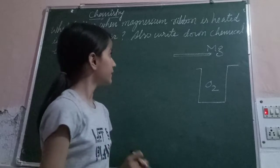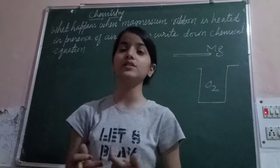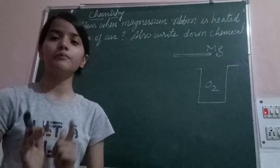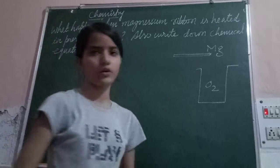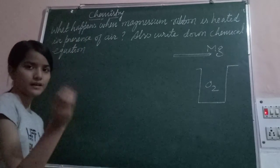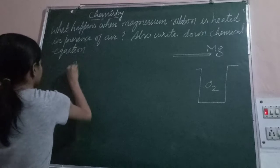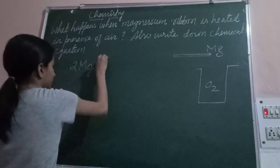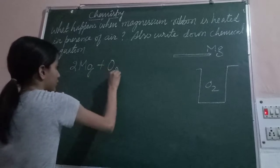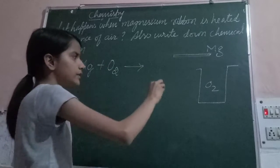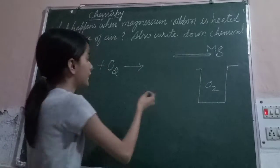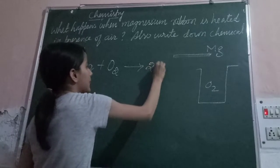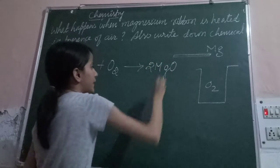When magnesium ribbon is heated in the presence of air, it combines with oxygen to form white powder or magnesium oxide. Let's write this as a chemical reaction: 2Mg + O₂ → 2MgO.